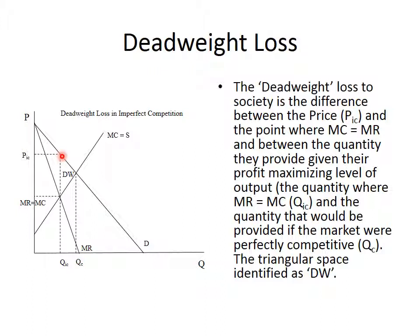This is the price that consumers are willing to pay for that many units. Based on the law of demand, the lower the price, the more the demand — the greater the amount of output, the lower the price they will pay for it. The fewer the items, the higher the price. So because production is lower in an imperfectly competitive market, price is going to be higher. As a result of that, you have a suboptimal output.